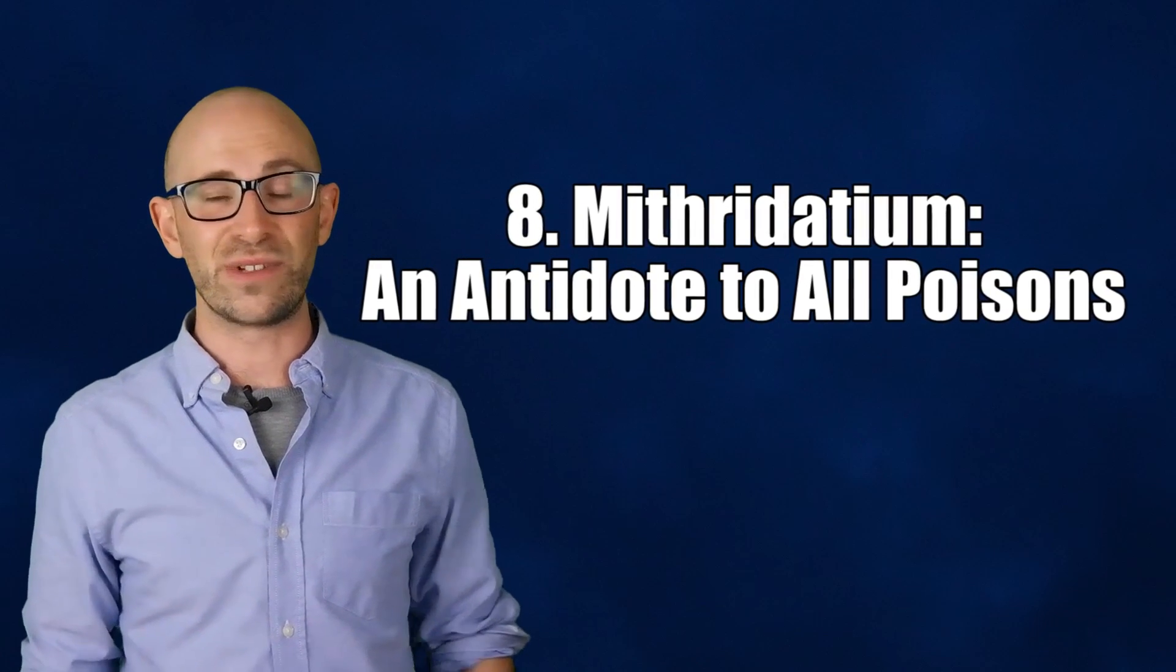Mithridatium, an antidote to all poisons. An antidote to all poisons, as well as a cure to many ailments, is said to have been developed by King Mithridates VI of Pontus and then later refined by the personal physician of Emperor Nero of Rome. According to historians, the original formula was lost, but did manage to survive as late as the Renaissance.